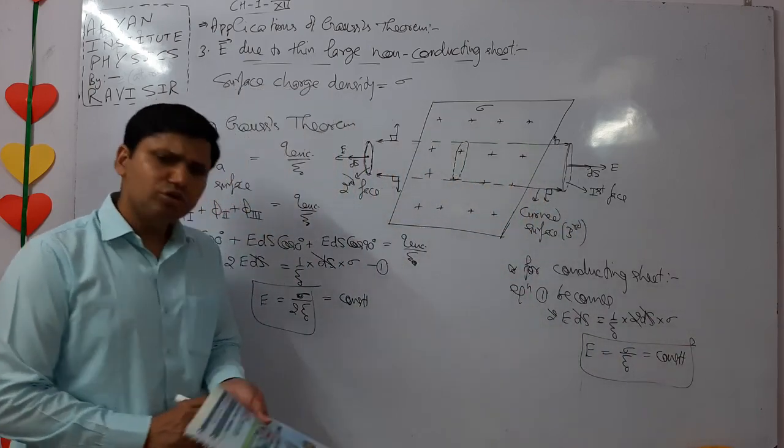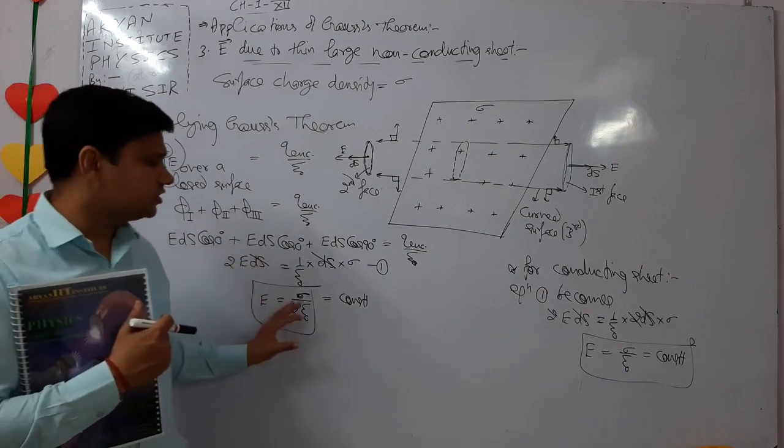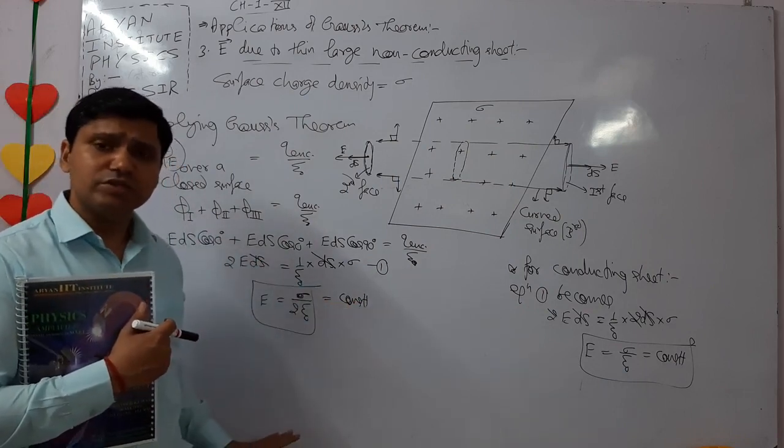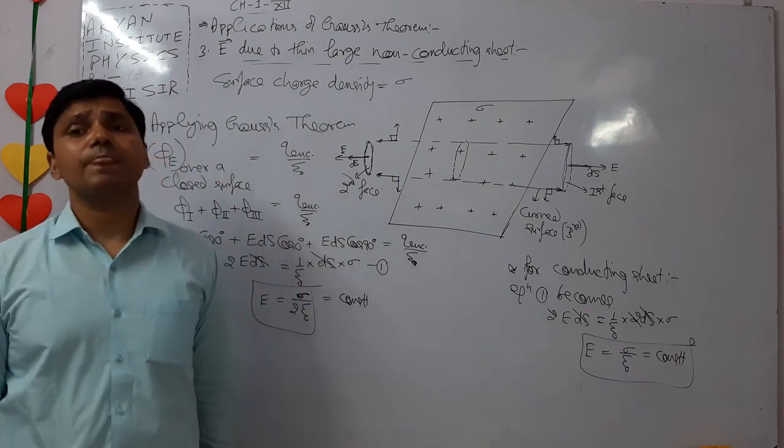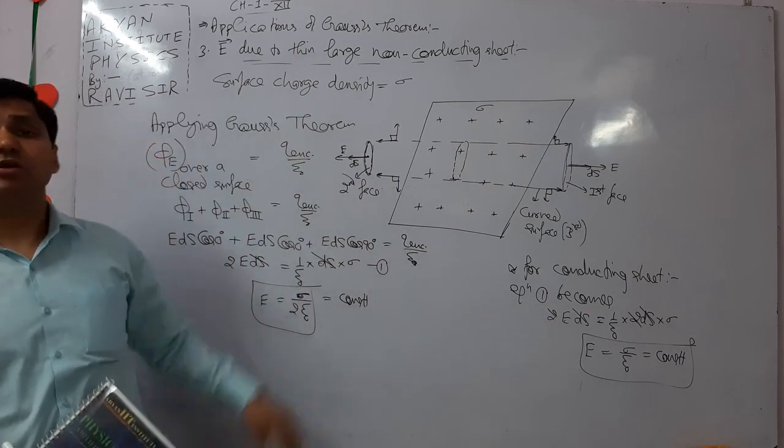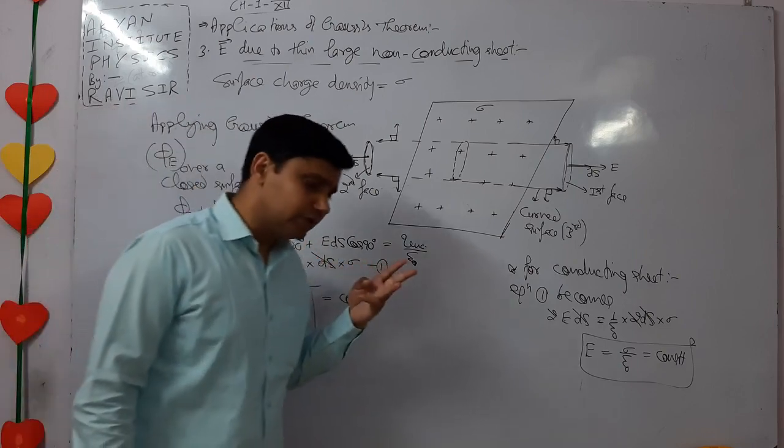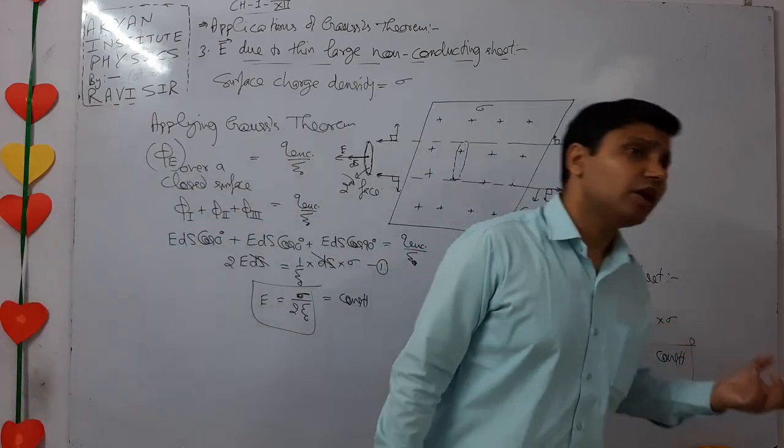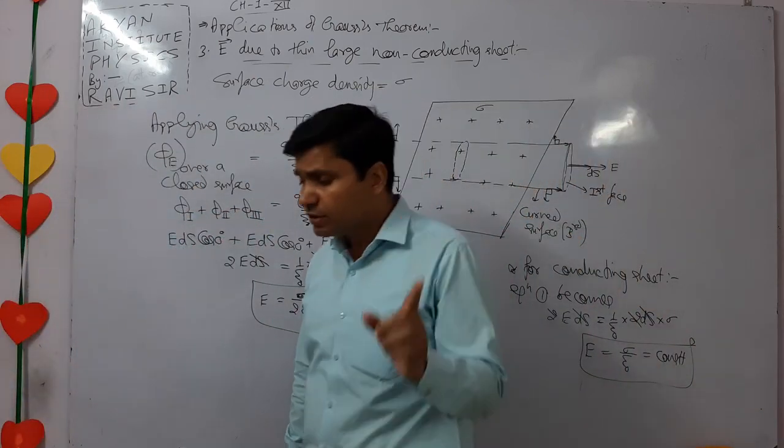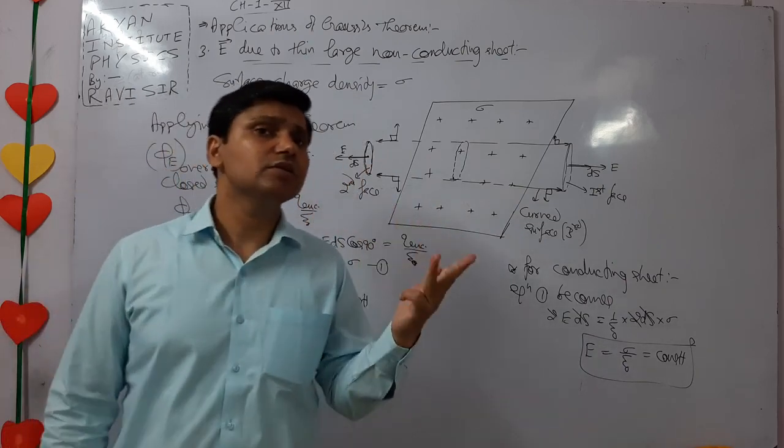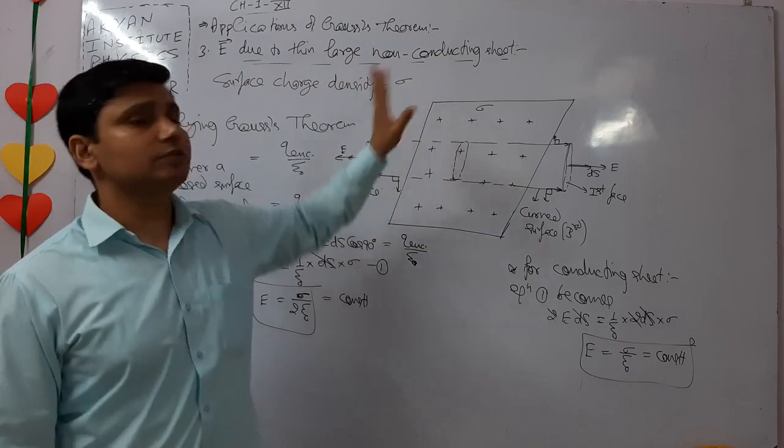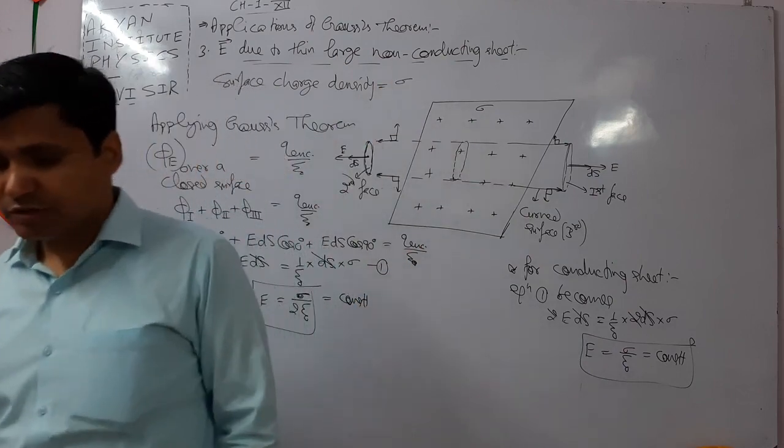For non-conducting sheet it's sigma by 2 epsilon naught, for conducting sheet it's sigma by epsilon naught. That is the case of the third application of Gauss theorem. The three applications we covered are: electric field due to long thin charged wire, second is sphere, and third is large sheet. Thank you.